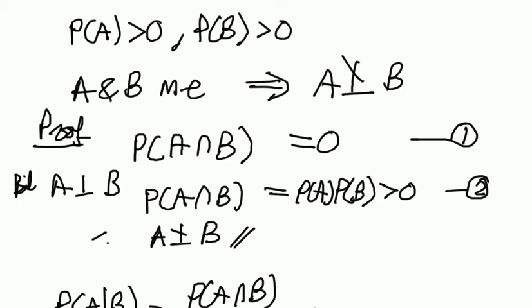What I'm going to do in this video is show that for two non-trivial events, events where the probability is bigger than zero, if the two events are mutually exclusive, this implies that A cannot be independent of B.